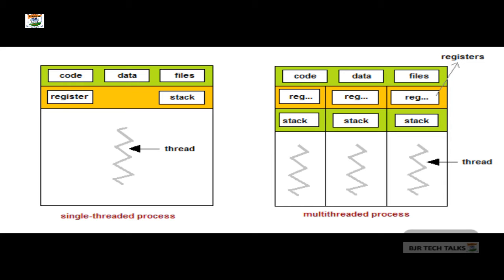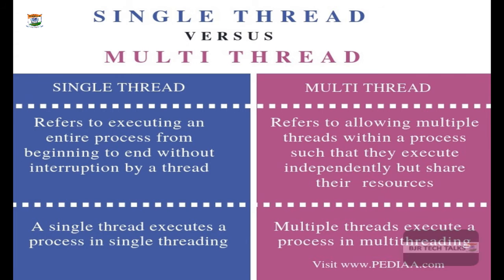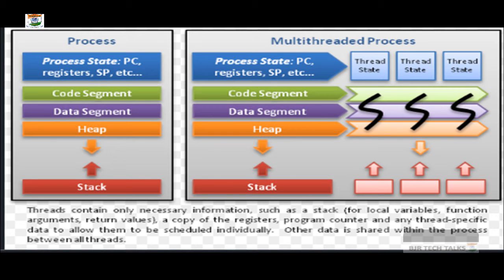What is the difference between a normal process and a thread? A normal process is called a heavyweight process. A traditional heavyweight process has a single thread of control. If a process has multiple threads, it can perform more than one task at a time. Even though it may appear to be doing one job, it is actually doing multiple jobs simultaneously, which improves performance.